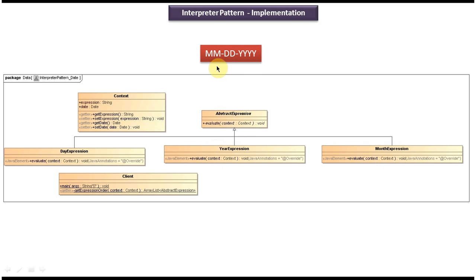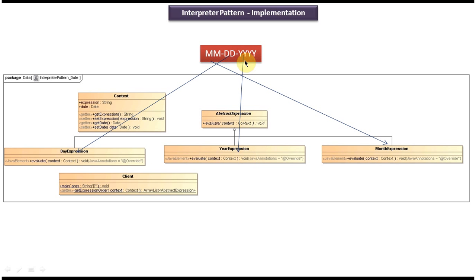So here you can see the expression MMDDYY. To replace the month value, we have month expression, and to replace the date value, we have day expression, and to replace the year value, we have year expression. So the evaluate method of month expression will get the date object from the context and from the date object it will get the month, and it will replace MM with the original month. So likewise, year expression will get the date object from the context, get the year value, and replace YYYY with the original year. And here you can see the client which has the main method, and this class is used to demonstrate this interpreter design pattern.